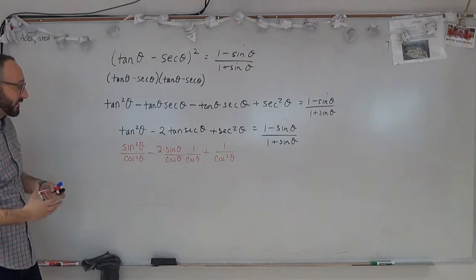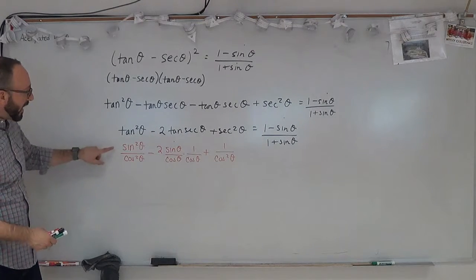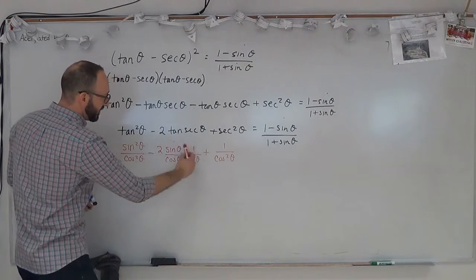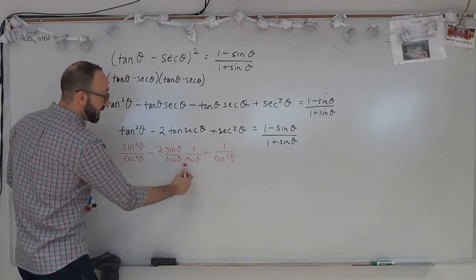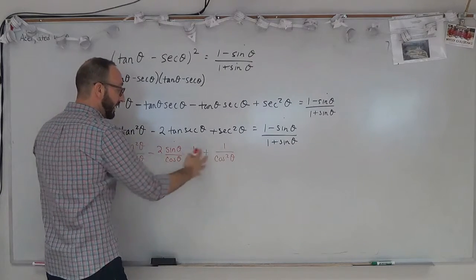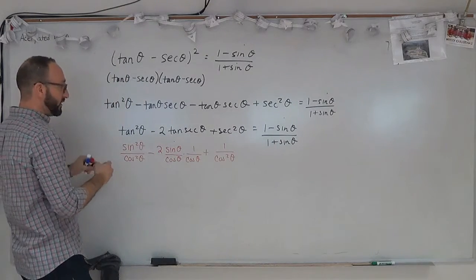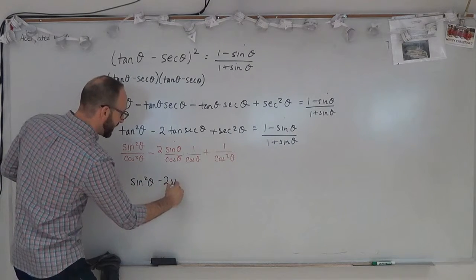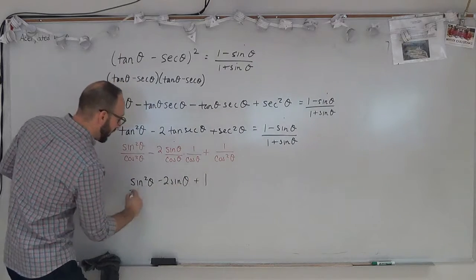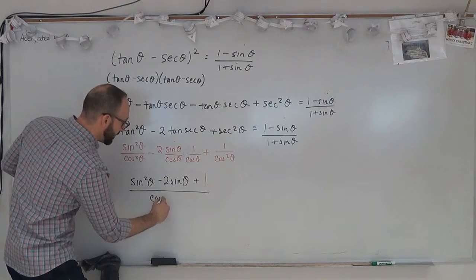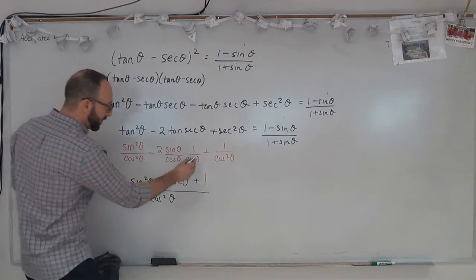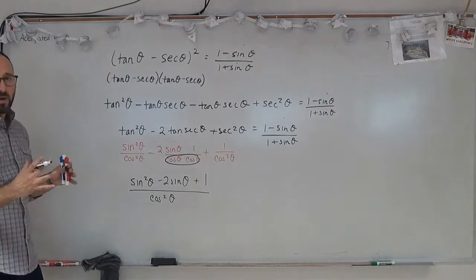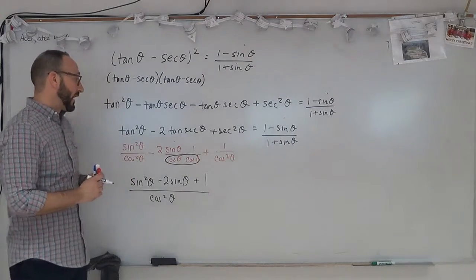Some nice things start to happen here. When we simplify the middle expression, we get a denominator of cosine squared theta, so we can combine all of these fractions. When we do that, we get sine squared theta minus 2 sine theta plus 1, all over cosine squared theta — because multiplying those terms gives cosine squared theta in the denominator.